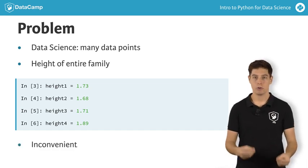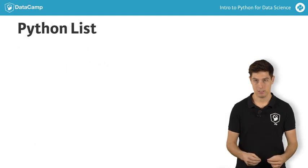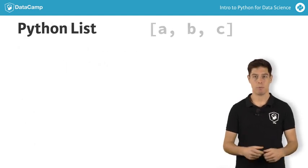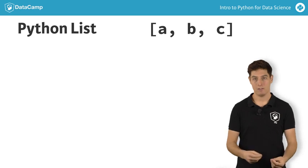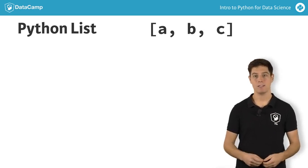What you can do instead is store all this information in a Python list. You can build such a list with square brackets. Suppose you ask your two sisters and parents for their height in meters. You can build the list as follows.